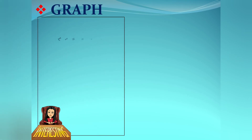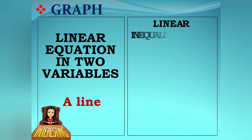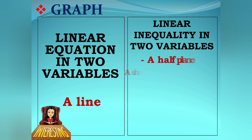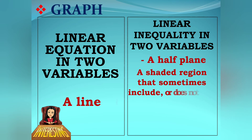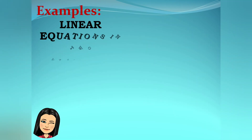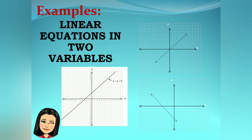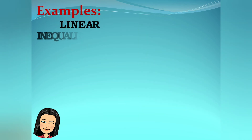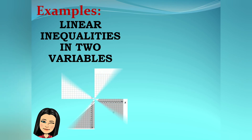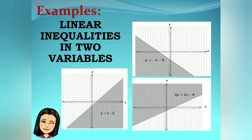In terms of graph: a linear equation in two variables shows a line. A linear inequality in two variables shows a half-plane — a shaded region that sometimes includes or does not include the line, depending on the inequality symbol. The graph of a linear equation in two variables shows a line, while the graph of a linear inequality in two variables shows a half-plane.